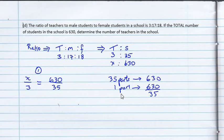Therefore, we can find what 3 parts represent. Remember, we're trying to find what 3 parts represent, the amount of teachers. So, 3 parts. If 1 part represents 630 over 35, then 3 parts represent 630 over 35 multiplied by 3 to get the amount equivalent to 3 parts. And this would be the number of teachers, 3 parts. And if you look at this, let's go. So, this is the second way of doing it.